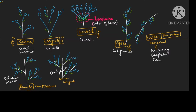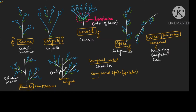Similarly, compound umbel has example of coriander and cumin. There is also compound spike, which is also known as spikelet, and its examples come from the grass family.